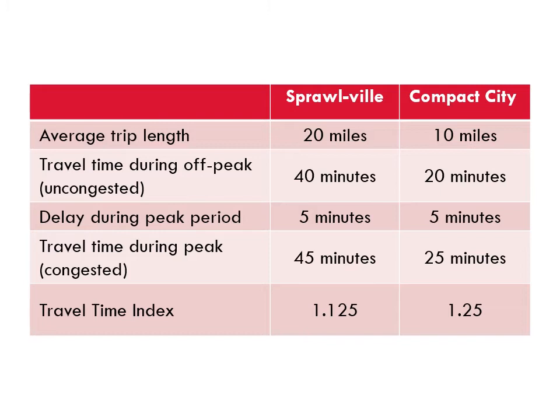A higher score indicates more congestion, so by this measure congestion is worse in the compact city. But which city would you rather live in? Total trip times in Sprawlville are much longer than in the compact city, even when there is no congestion at all. I would certainly prefer to travel in the compact city.